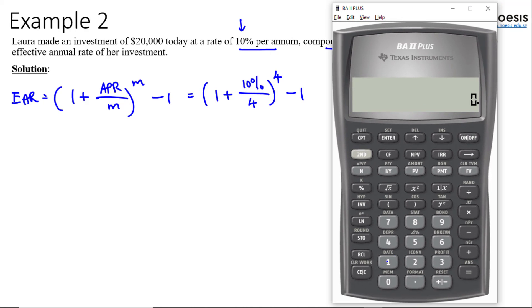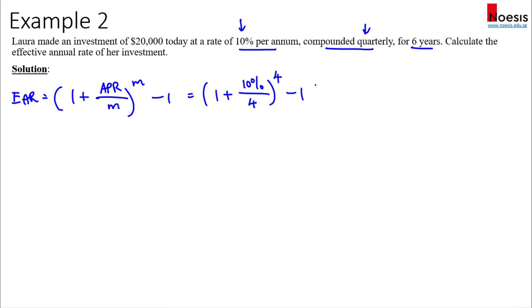Now using the calculator we'll just key in 1 plus 0.1 divided by 4, so that's 1.025 to the power of 4, then minus 1. That's 10.38 percent, so that's our EAR. That's the effective rate of growth per year assuming a compounded quarterly compounding basis.